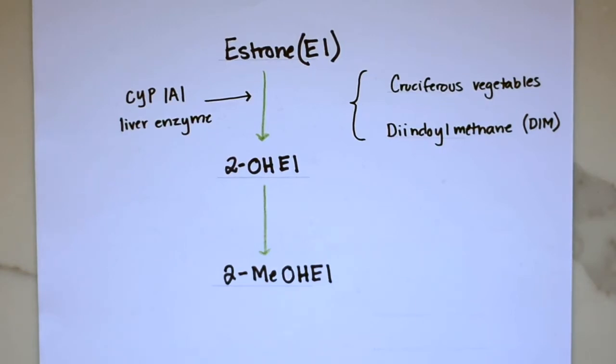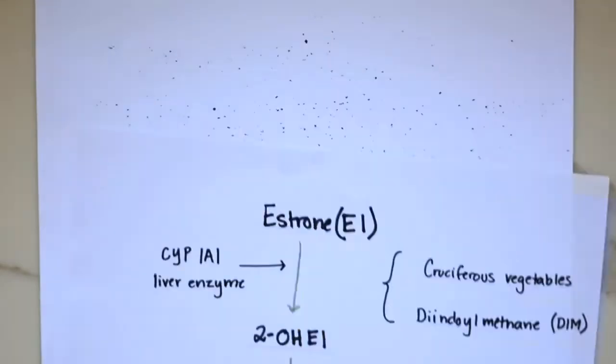So we also take into consideration environmental factors that may be affecting this pathway. For example, insecticides have been shown to reduce the activity of the 2-hydroxyl pathway.